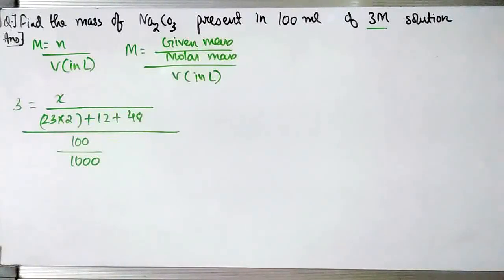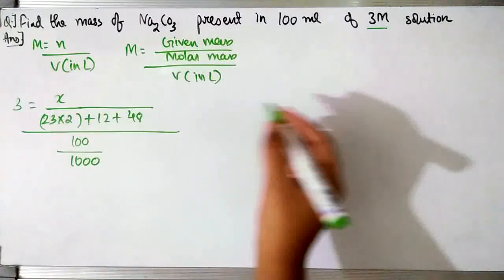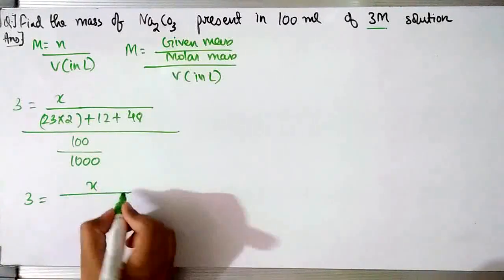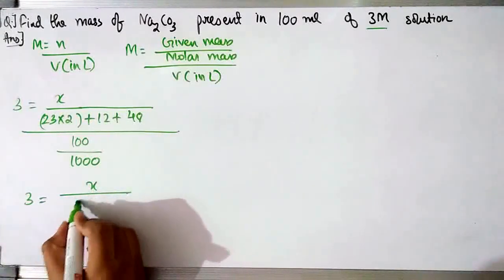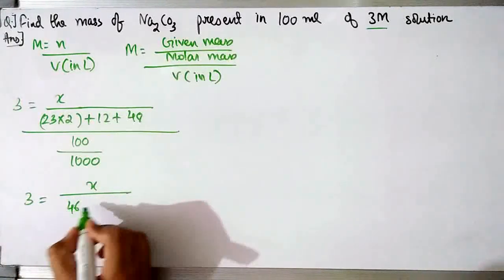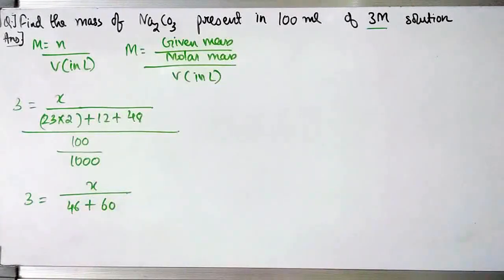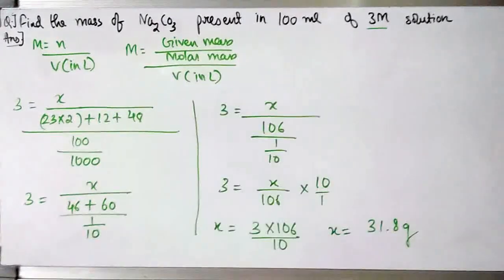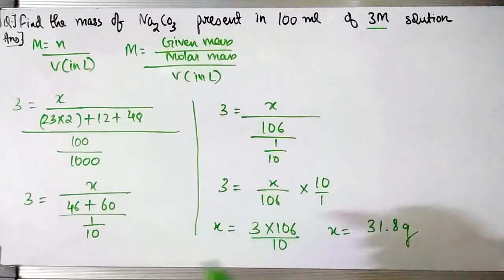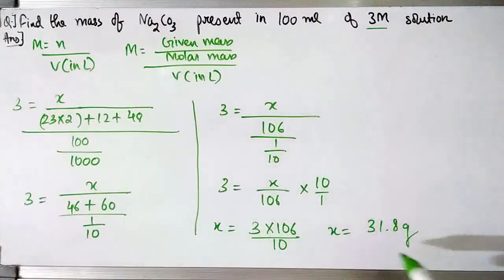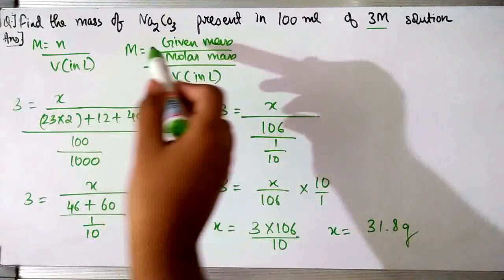We always have to convert the volume of solution given in ml into litres. When you further solve the question and find out x, you get the value of x to be 31.8 grams — that is the mass of Na₂CO₃.